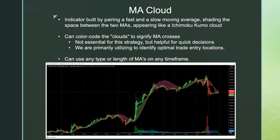The second component is a moving average cloud — an indicator built by putting together two moving averages: one faster (the green line) and one slower (the red line), with shading in between. When it's a red cloud, the slower/longer moving average is higher than the faster one. When it's a green cloud, the faster moving average is above the slower one. That's helpful for quickly looking at a chart and determining if it's mostly bullish or bearish.